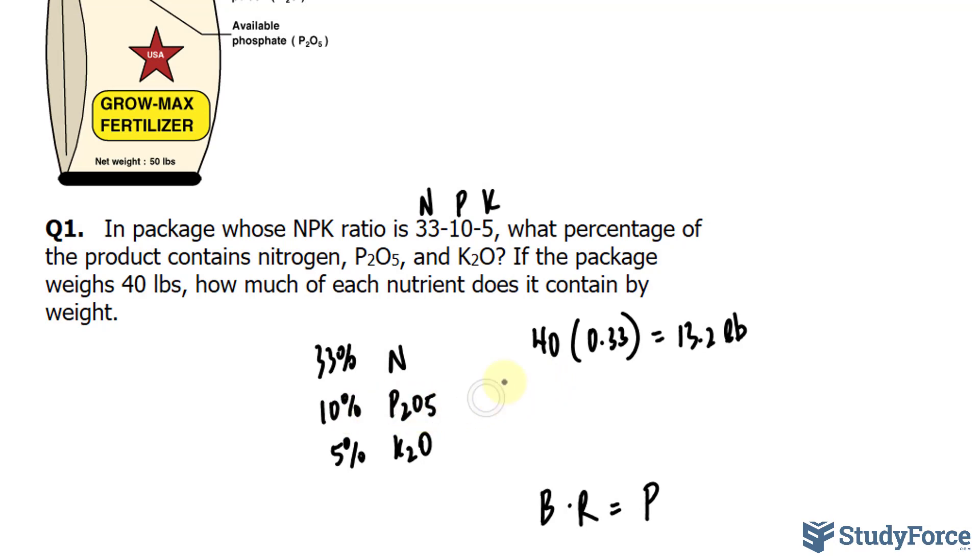Again, we'll do the same thing for the next nutrient. So 40 times 0.10, and that gives us 4 pounds, 4 pounds of P2O5. And finally, 40 times 0.05, that makes 2 pounds.